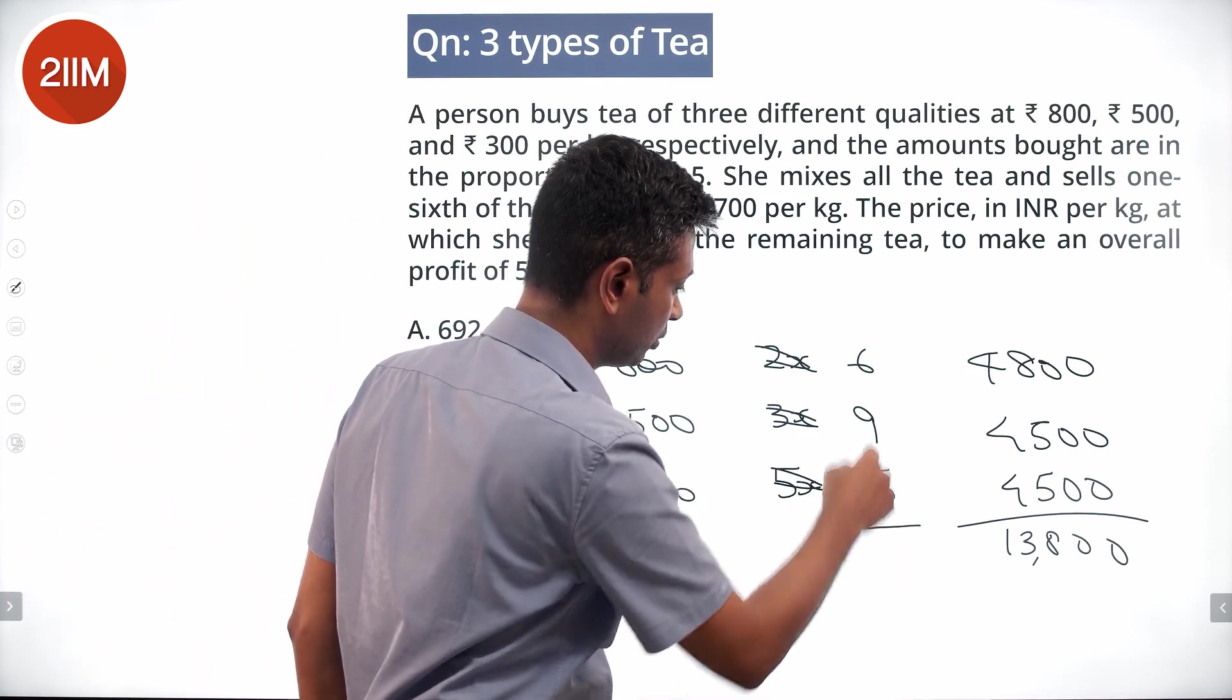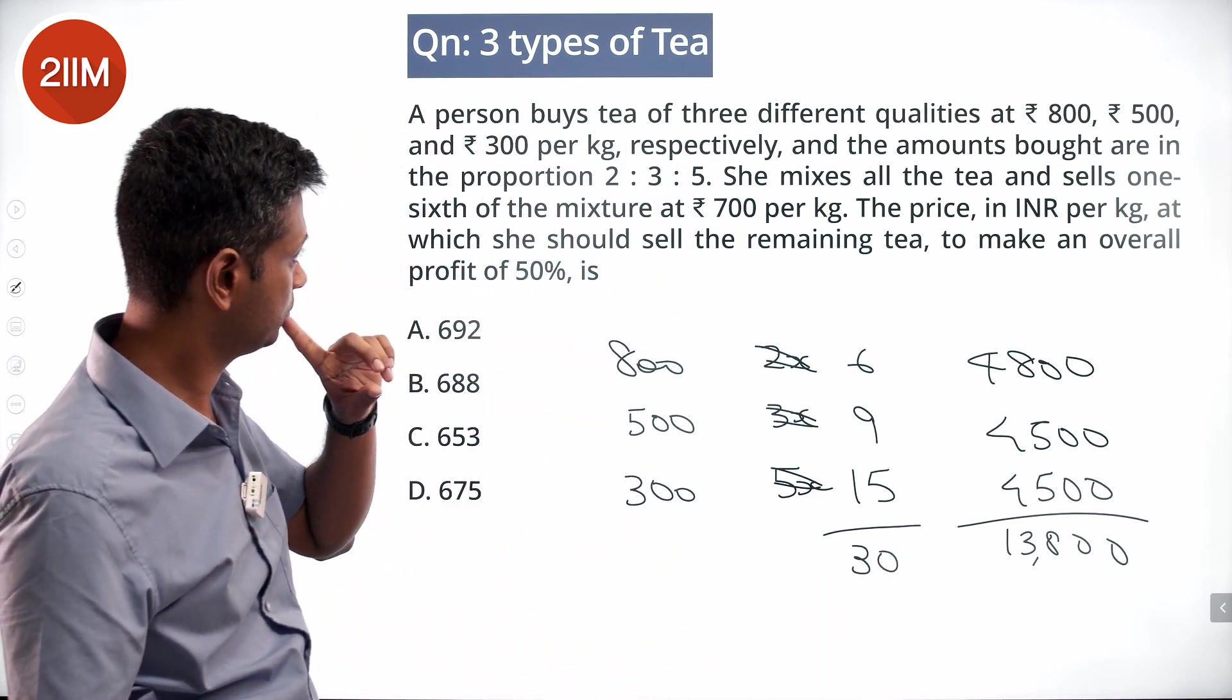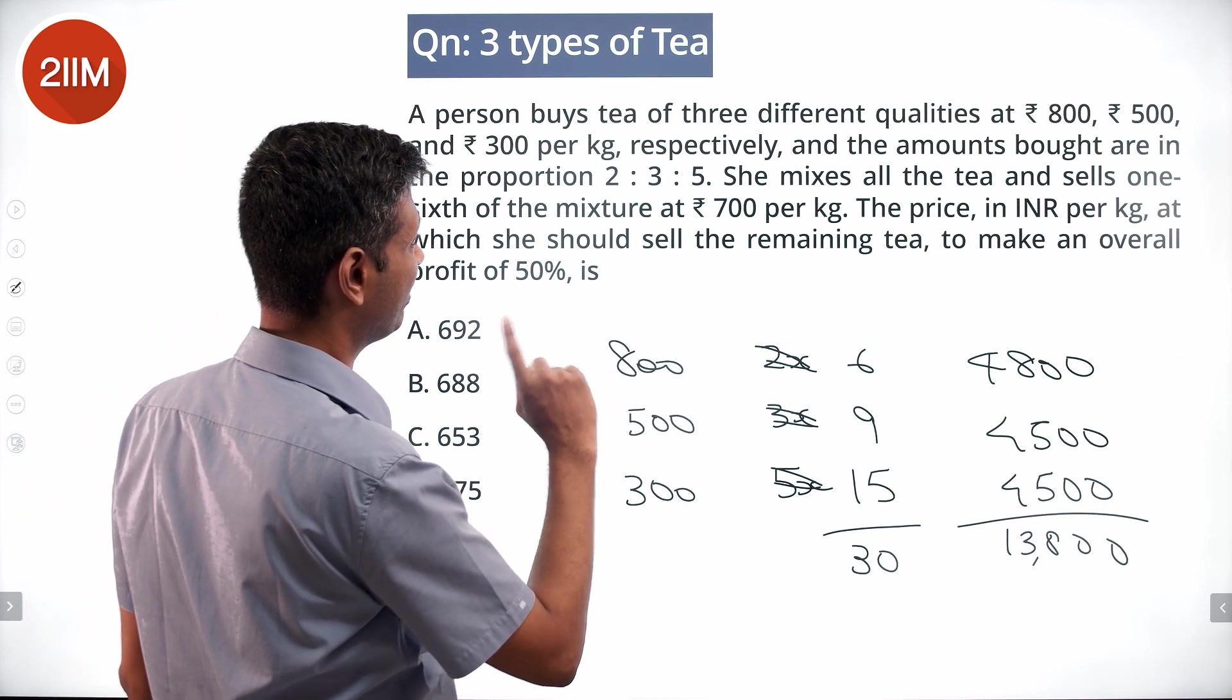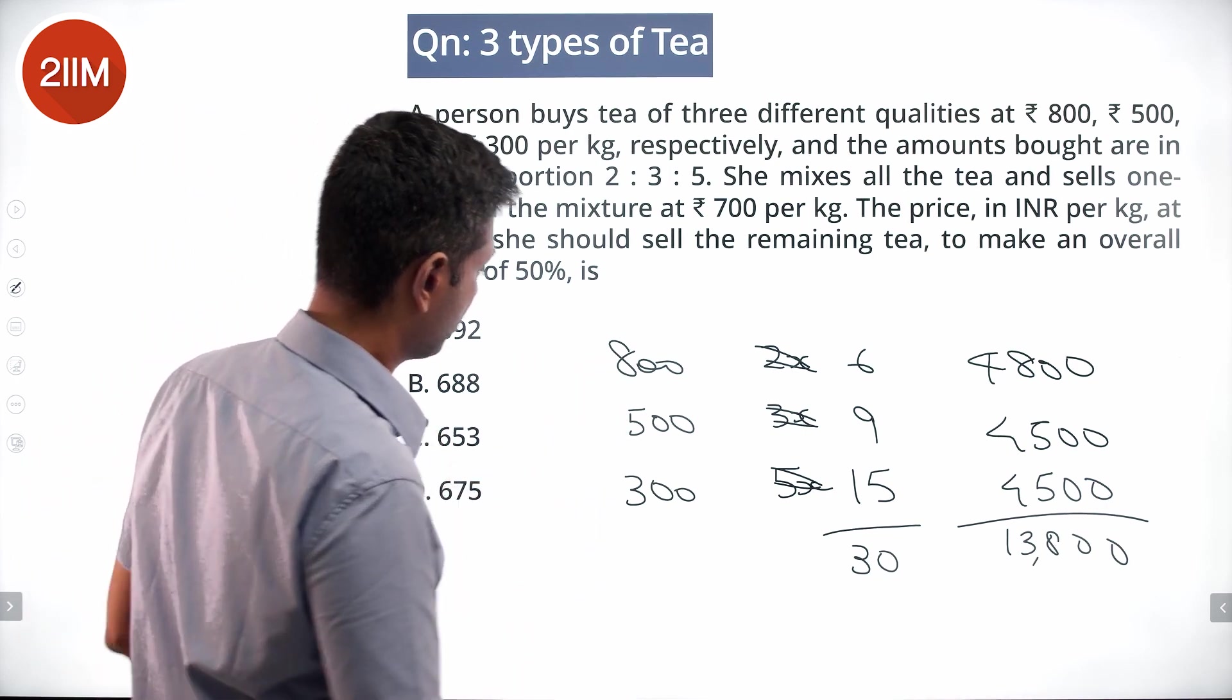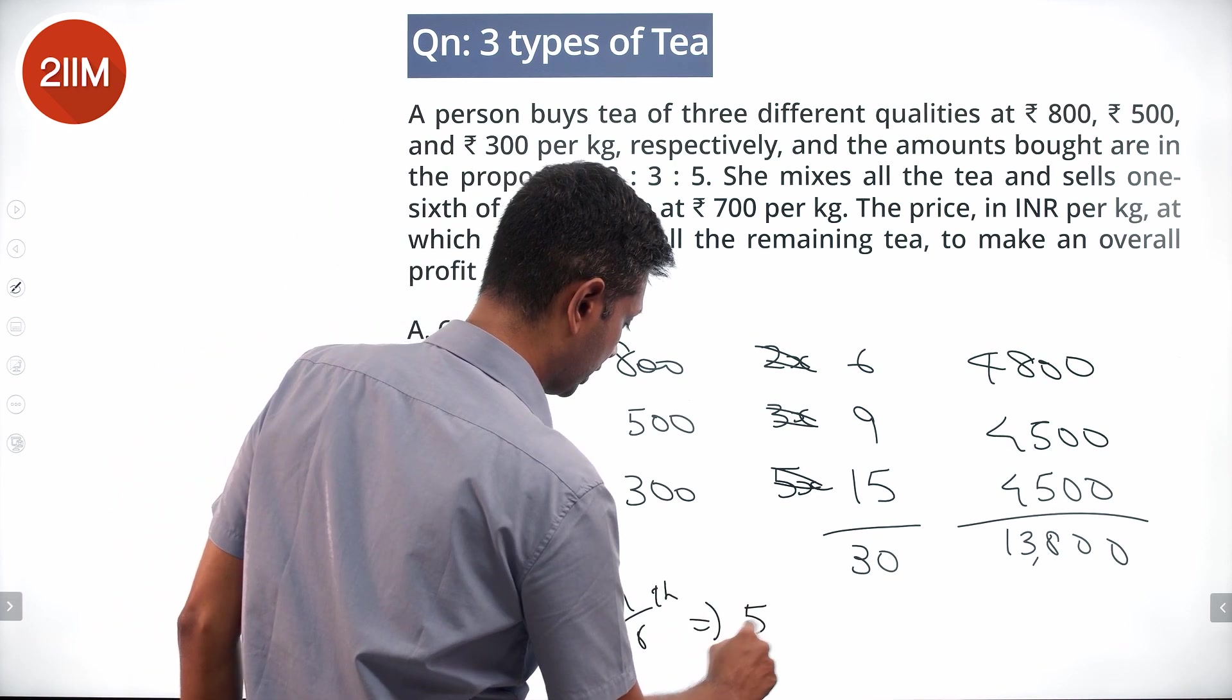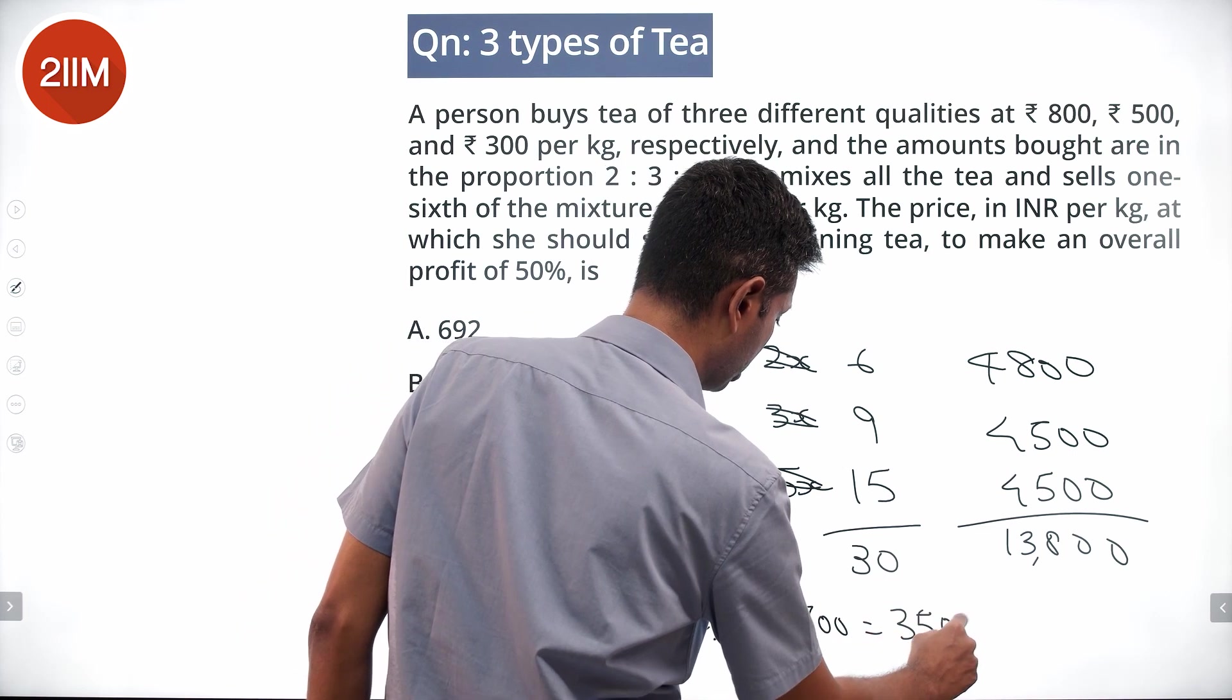Total number of kilograms is 15 plus 15, 30. One-sixth of this, she sells at 700 per kg. One-sixth is 5 kg. She sells at 700 per kg. One-sixth implies 5 into 700 equals 3500. 3500 rupees she makes.